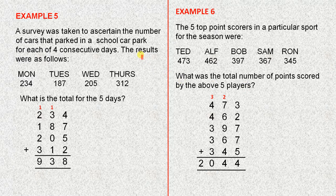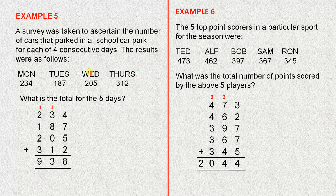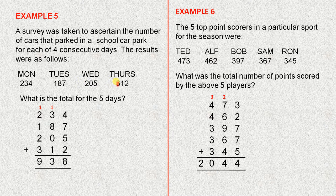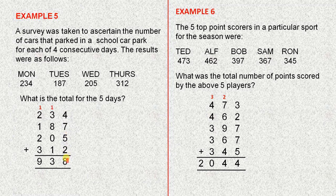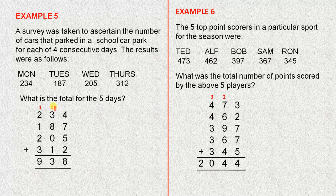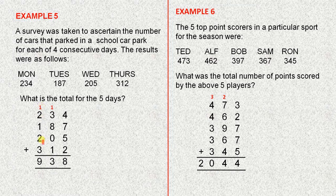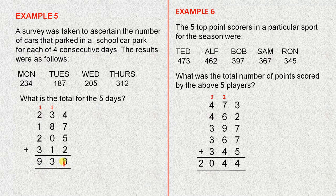Example five. A survey was taken to ascertain the number of cars that parked in a school car park for each of four consecutive days. The results were as follows. Monday, Tuesday, Wednesday and Thursday, those cars were parked there each day. What's the total for the five days? We put all the numbers together in the columns perfectly and we add them up. So when we add those digits there, we get eighteen, which is eight in the units column and there's one ten. Add all those up, you get thirteen, which is three lots of ten and there's one hundred. Add all those up here and that gives you nine. So nine hundred and thirty-eight cars altogether. So nine hundred and thirty-eight cars parked there for the entire four days.